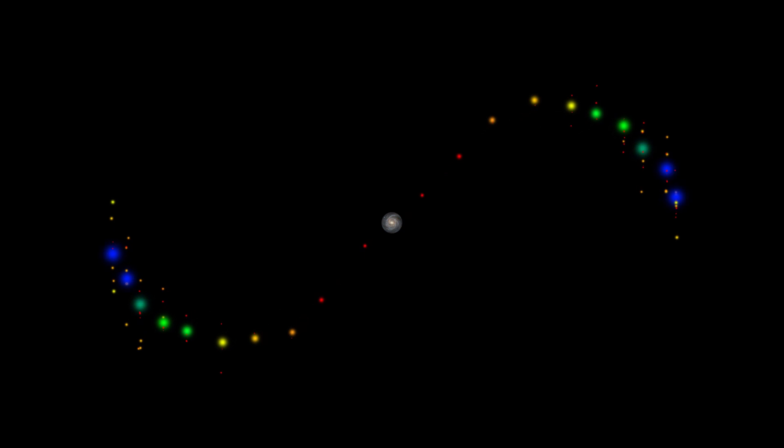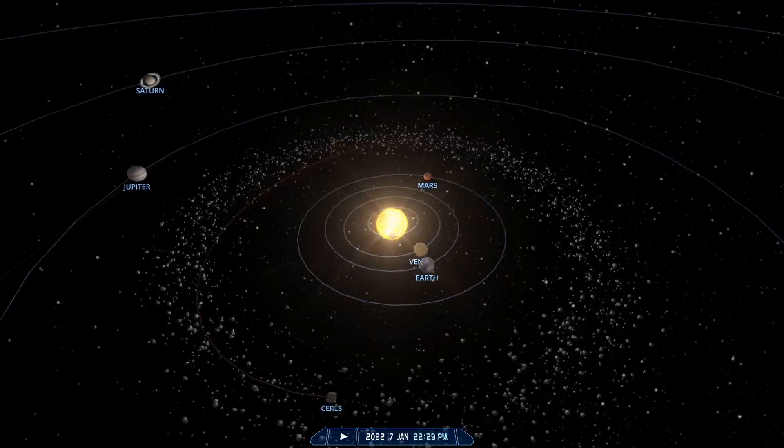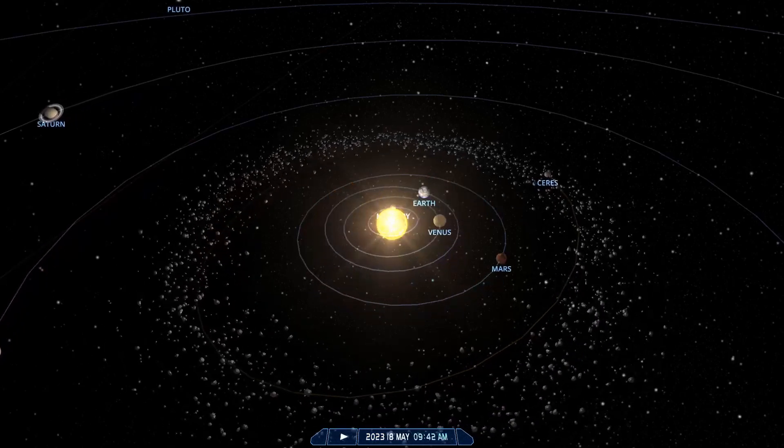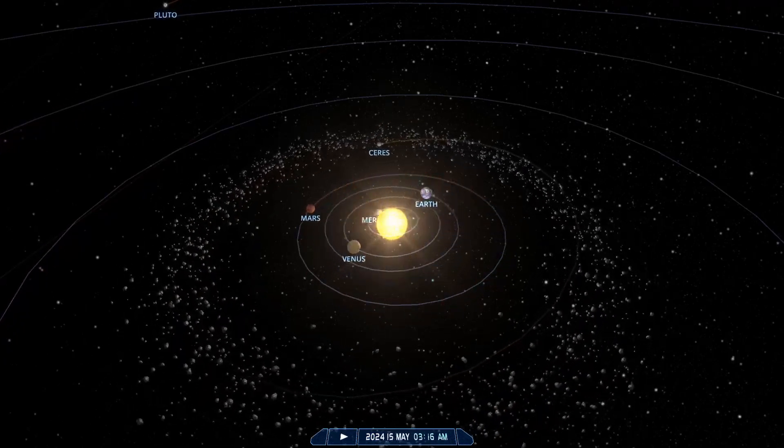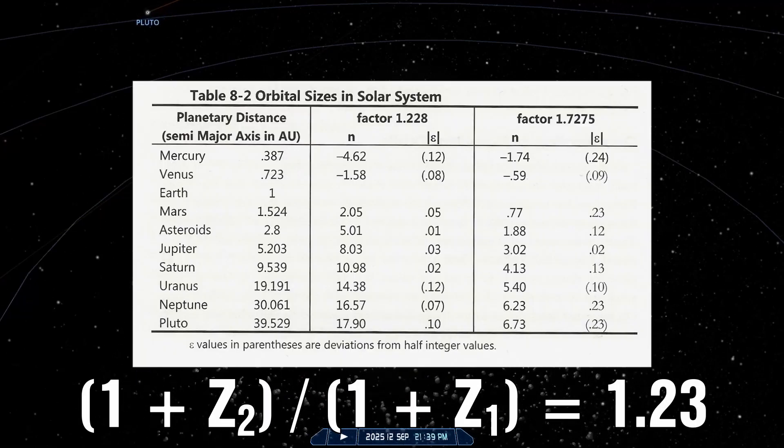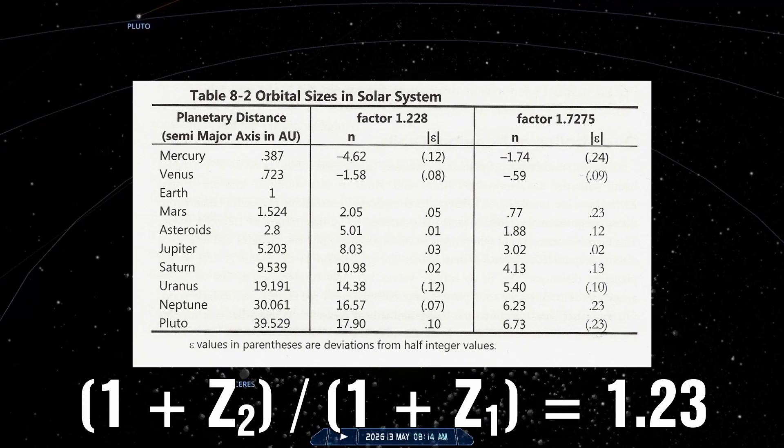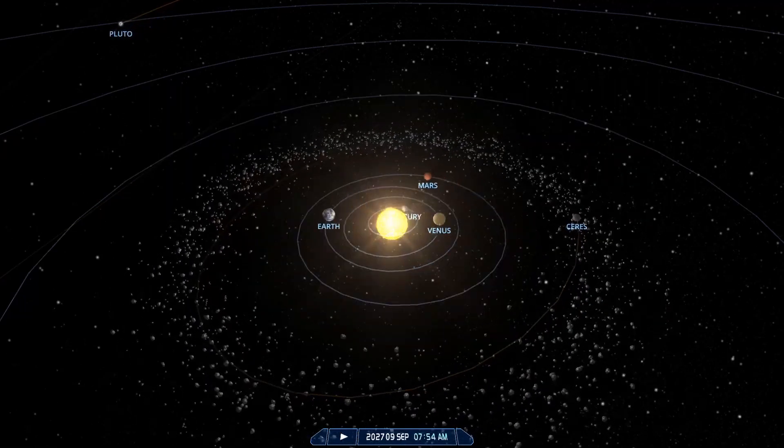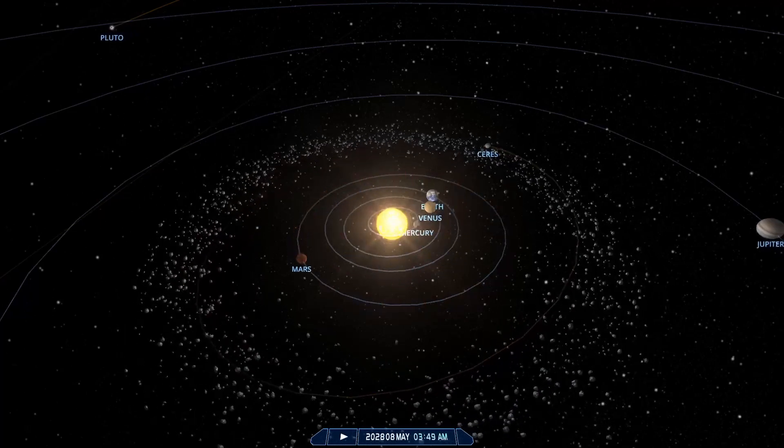So where else do we find this quantization? When we look at the Bode law of planetary distances then the value of 1.228 which are calculated from a combination of factors provides a much better fit than the value of 1.7275 used in the modified version of this law. Could it be coincidence that we find this in our planets?